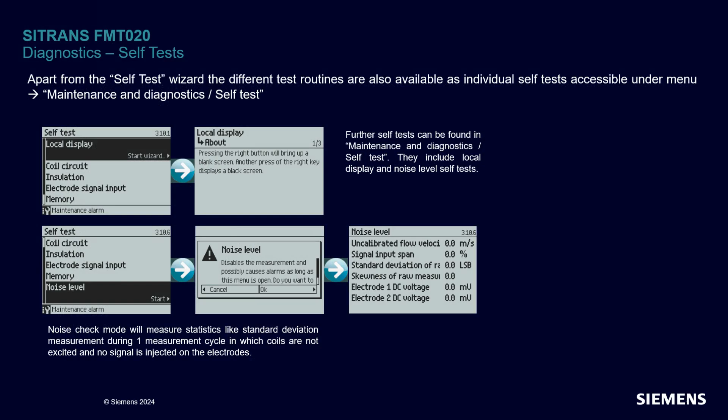In addition to the self-test quick-start wizard, you can select further tests in the maintenance and diagnostics menu. You may select which tests you want to perform and in two clicks get the report directly on the local user interface. For example, you can test the pixels of the display by alternating all pixels on and off, and you can also check the system noise levels.